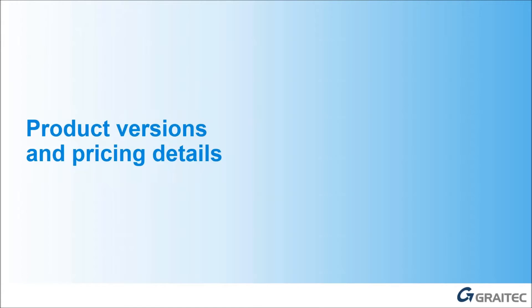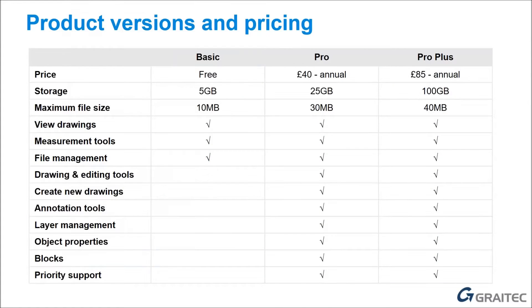So how much does it cost and what versions are there? There are actually three versions. We've got a basic one which is free of charge — you can download it, and you'll automatically get five gigabytes of storage when you sign up for an Autodesk account. The maximum file size you can open is 10 MB. You can view drawings, measure, and there's some file management in there. We then have the Pro version.